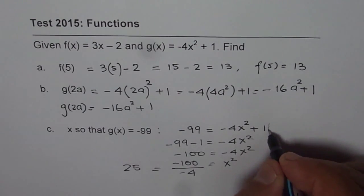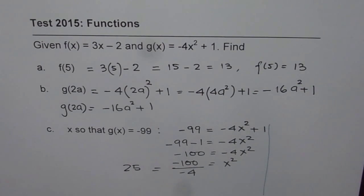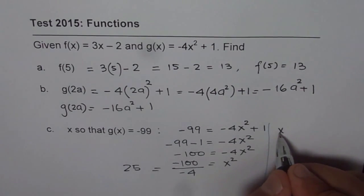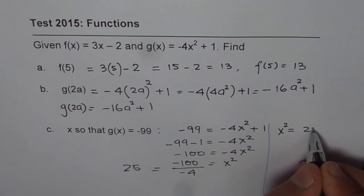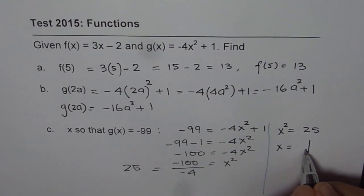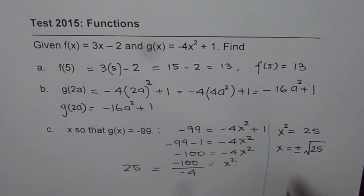What is x equal to? I have seen students making mistakes at this stage also. We have x² = 25. So x is equal to square root of 25. Square root of 25 with both plus and minus sign. So it is ±5. For both values, plus and minus 5, g(x) will be -99. Remember whenever you square root, always remember to write plus and minus.